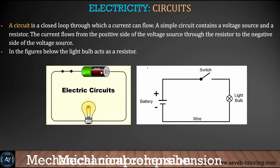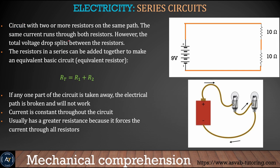There are mainly two types of circuits: series circuit and parallel circuit. In a series circuit, components are connected in a line, and the total resistance RT = R1 + R2 — you add them up. Make sure you can identify which circuit is series and which is parallel, as the test will ask about this.